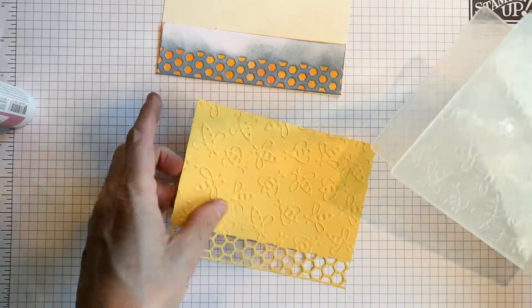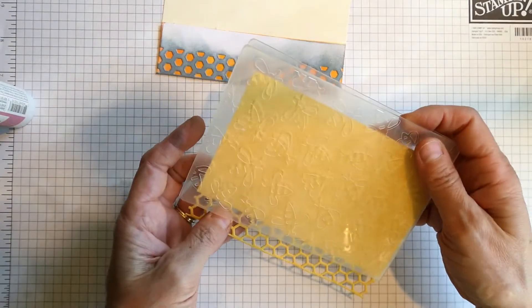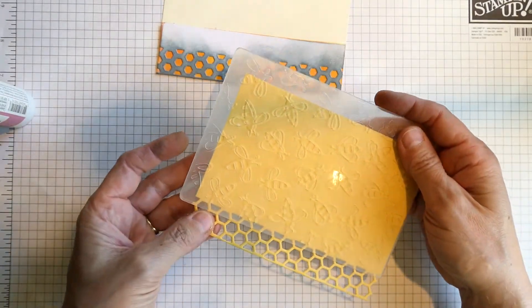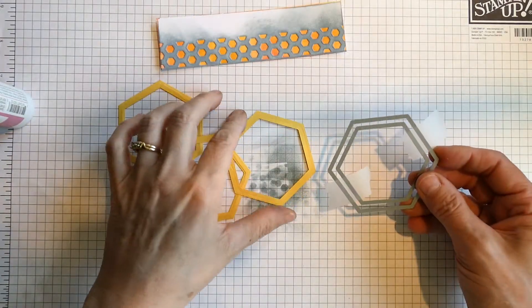Then I used an embossing folder that had some little bees on it and ran that through to give a little bit of dimension there.